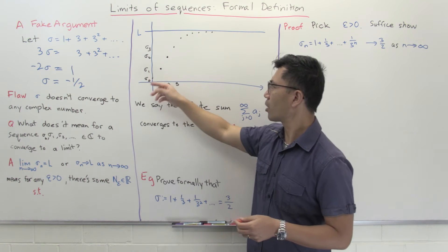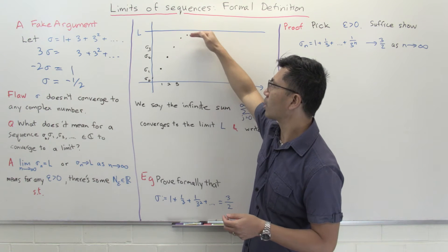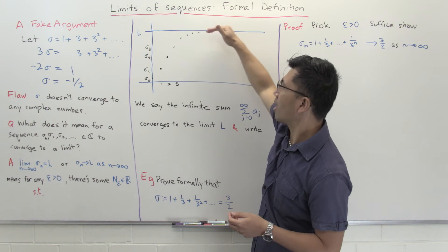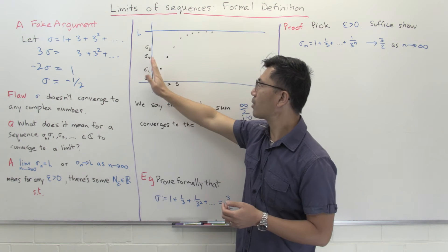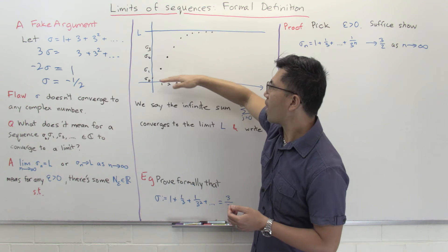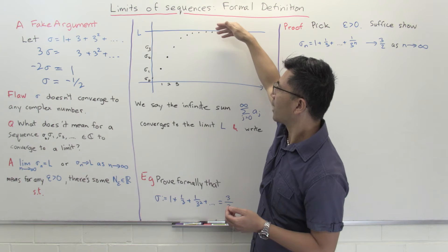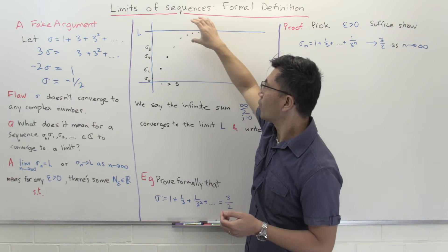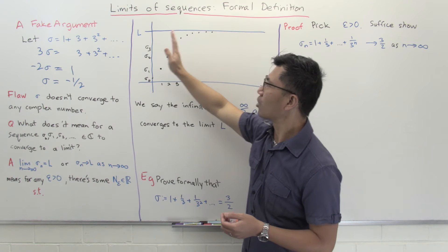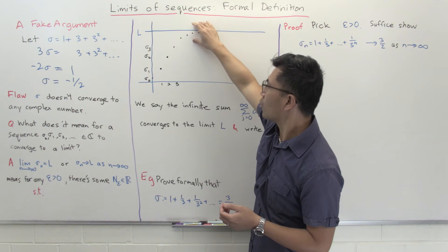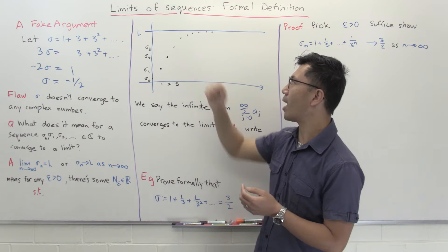As you move forward in time, these y-values get closer and closer to L. They don't have to touch L — they might, but they don't have to. What you want is that as time goes by, the σ values get closer and closer to L. You can get as close to L as you like without touching it, as long as you wait long enough. And not only do you get that close — you stay that close, as long as you wait long enough.